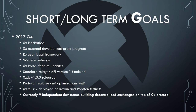Their short-term and long-term goals — I'm going off the roadmap, which they're also posting on Twitter. For Q4 2017, they have the hackathon, the external development program, relayer legal framework, website redesign, portal updates, API version one finalized, and JavaScript version one released. Currently they have nine independent dev teams building decentralized exchanges on top of the 0x protocol. One of the biggest is eFenix — their eFenix integration is most promising in my opinion.